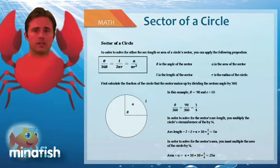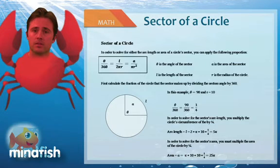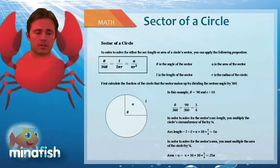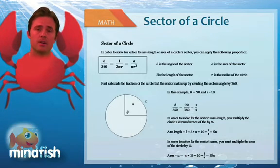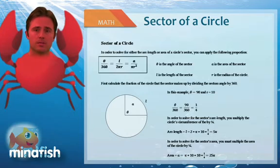If we want to solve for the arc length of the sector, we do the same thing. We start by solving for the circumference of the circle, which in this case would be 20π. And then we divide by 4 yielding a circumference of 5π.